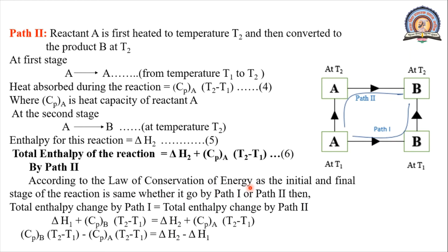Since the initial and final states of the reaction — A at T1 giving B at T2 — are the same regardless of the path taken, the law of conservation of energy states that total enthalpy change by Path 1 equals total enthalpy change by Path 2. Equating the two: ΔH1 + CpB·(T2 − T1) = ΔH2 + CpA·(T2 − T1).